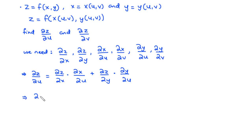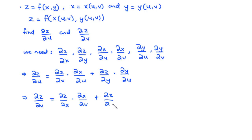For the partial derivative of z with respect to v, we also move from z to x and then from x to v, plus from z to y and then from y to v. This is how to find the partial derivative of z with respect to v. With that in view, let's consider the next example.